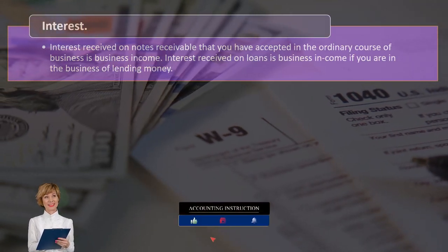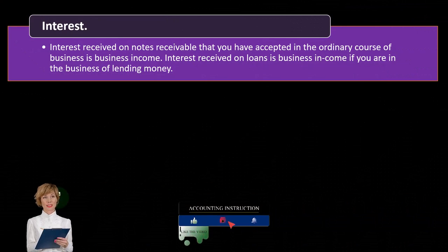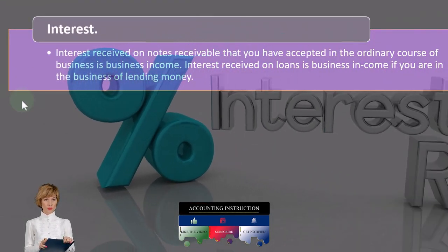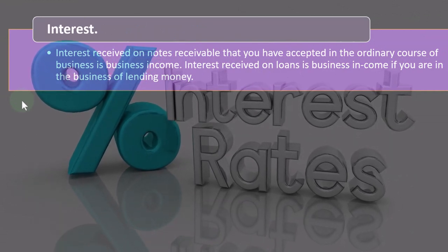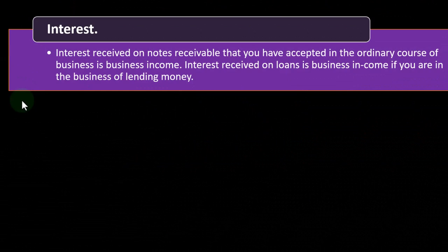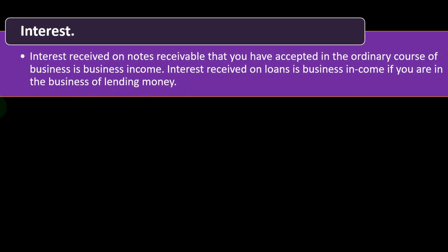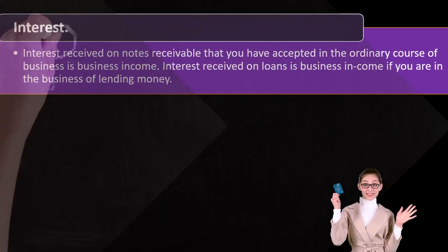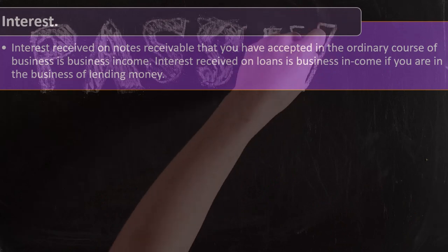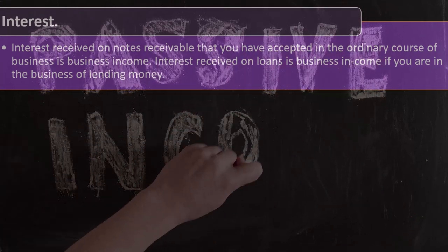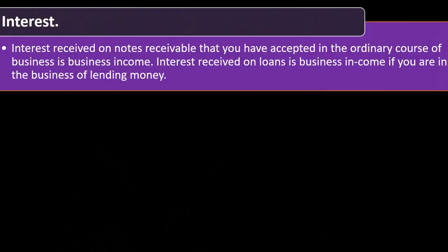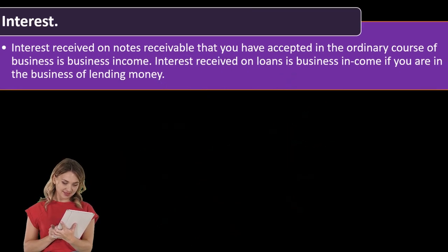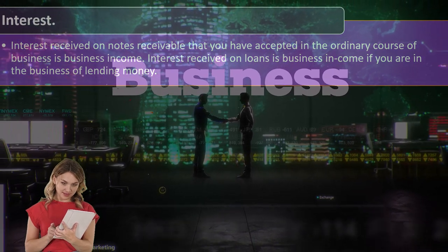Moving on with our discussion of business income related to Schedule C, we turn to interest. Interest received on notes receivable that you have accepted in the ordinary course of business is business income. Interest and dividends can get confusing because we often think of interest as passive income — something we get when we have money in the bank. However, it depends on the industry in determining where to report that income.